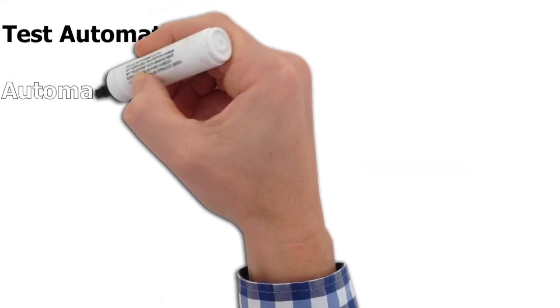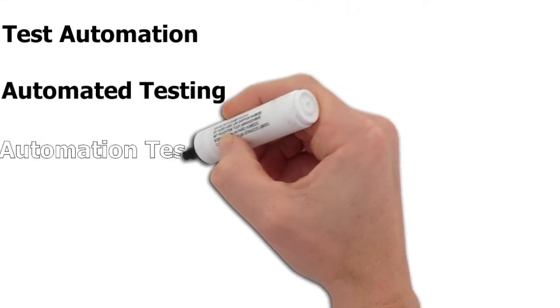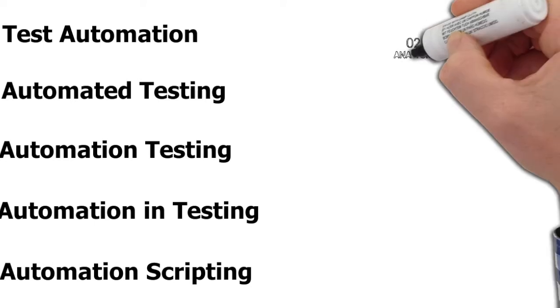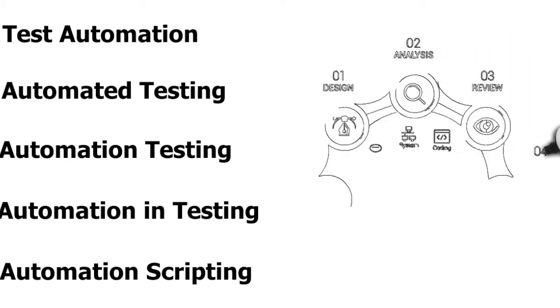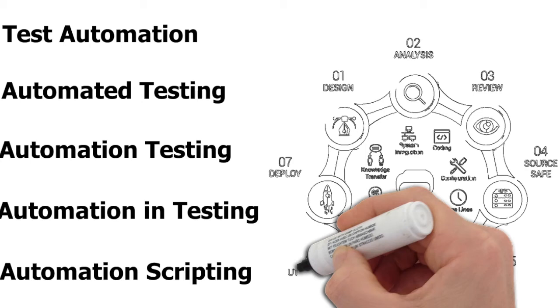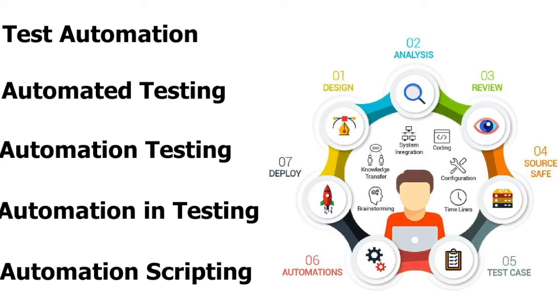Terms like test automation, automated testing, software test automation, automation scripting, and automation in testing are all commonly used. As I see it, all of these terms mean the same thing — they all point to designing a test automation framework, analyzing what you want to achieve, how to achieve it, and reviewing your process and framework.